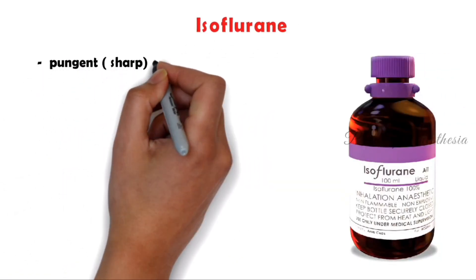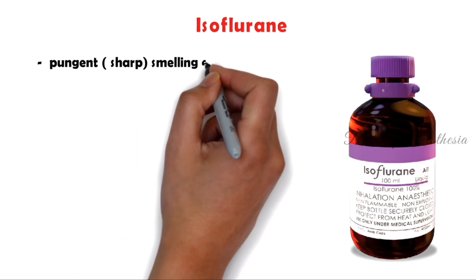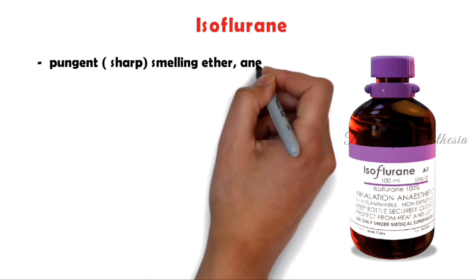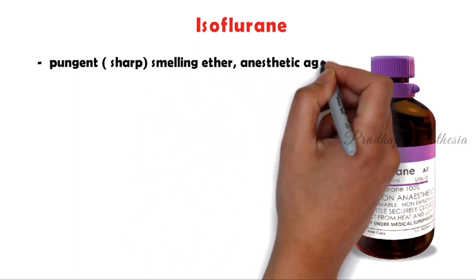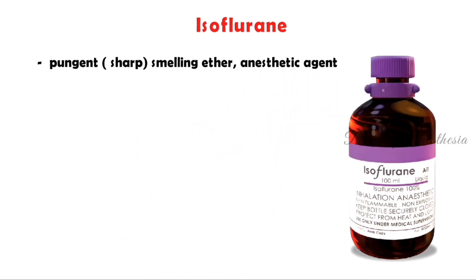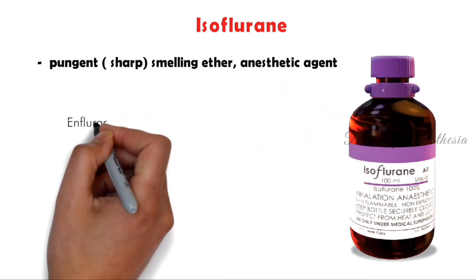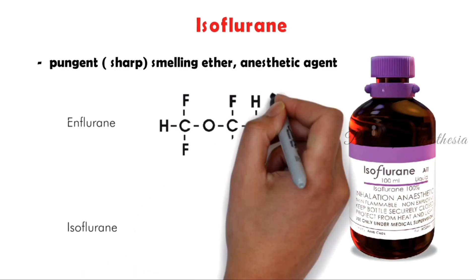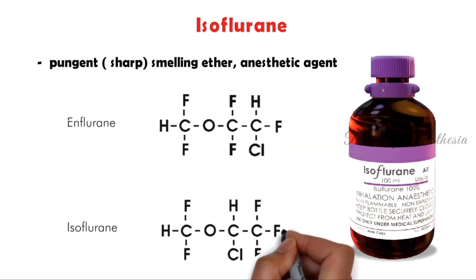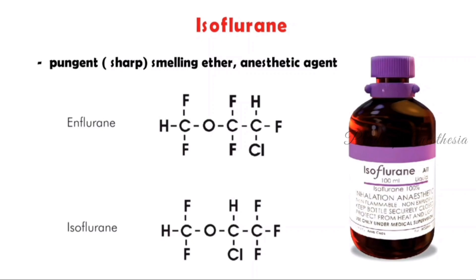Isoflurane is a pungent-smelling ether anesthetic agent. It is made by an isomer of enflurane. It is one of the commonly used inhalational anesthetic agents. Now we'll discuss its systemic effects.